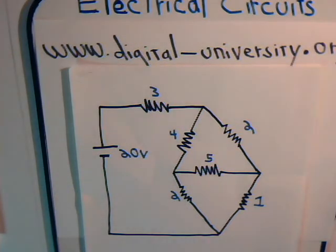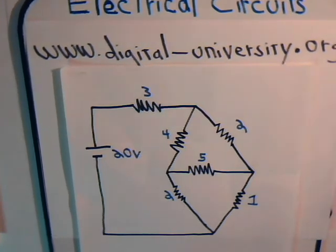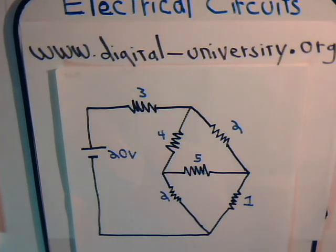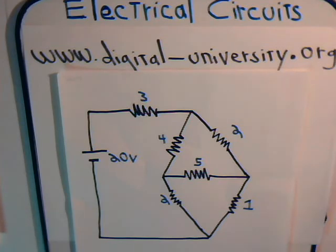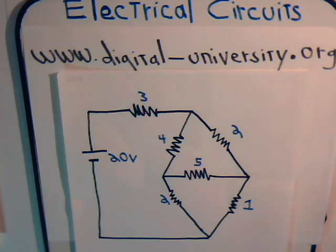This is video number 32 from digital-university.org, part of our series on electrical circuit analysis. We're going to rework a problem from video 17, where we solved a bridge-type circuit using mesh current analysis. In this video, we'll rework the same problem using nodal analysis technique.